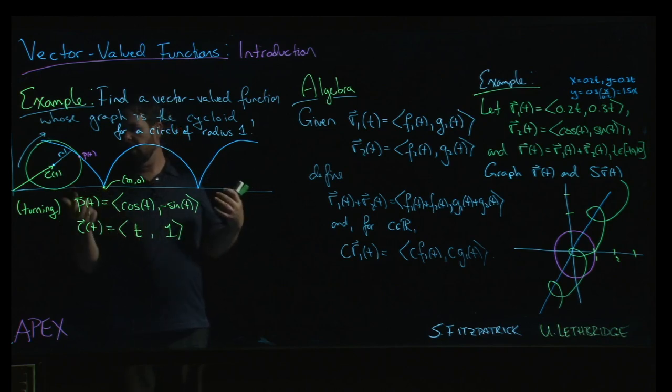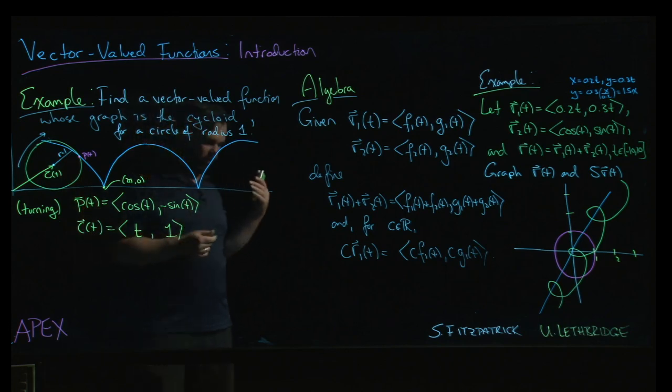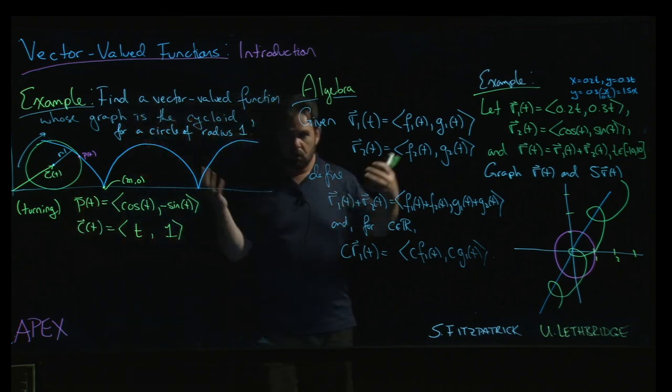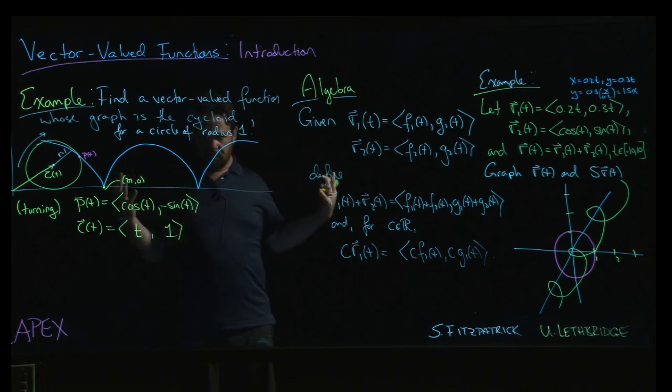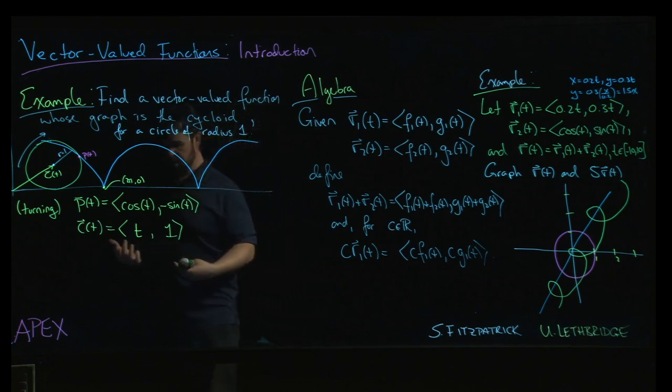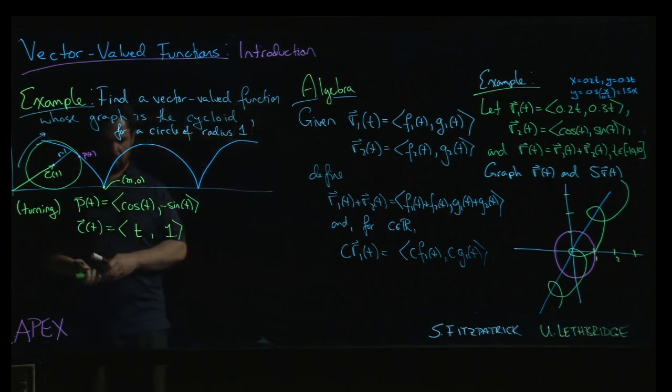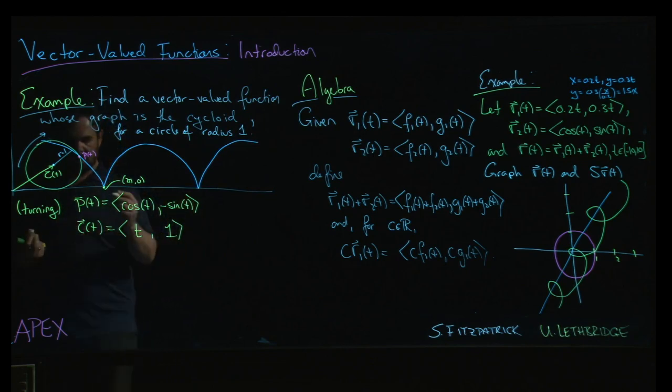And the other thing that could happen is we could change the radius, right? If the radius was, let's say the radius was 2 or 4. If the radius was 4, then we would get to 8π here. And again, you would have to rescale, right? So we've sort of chosen the simplest possible scenario, which corresponds to the sort of the standard cycloid, but does the job. Right? And we know how to account for those sort of variations if they were to come up. Right?